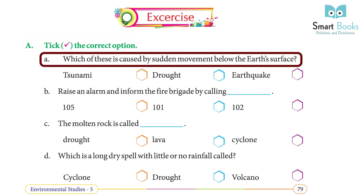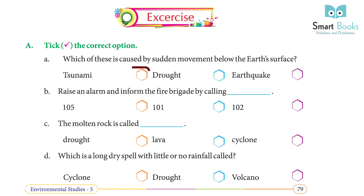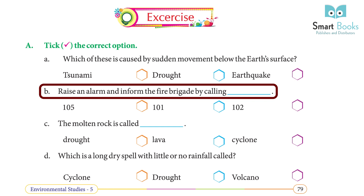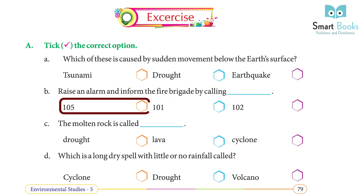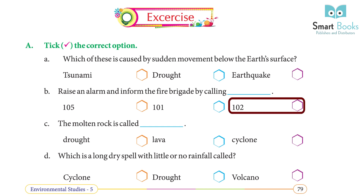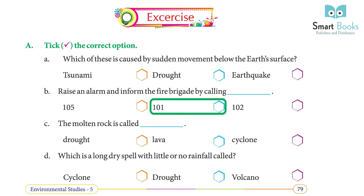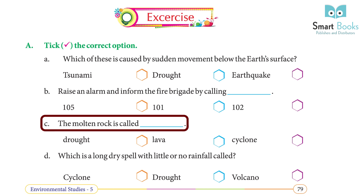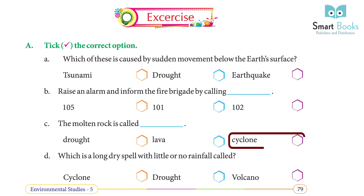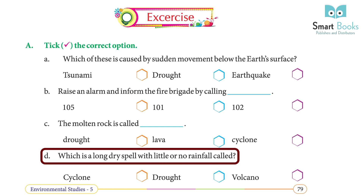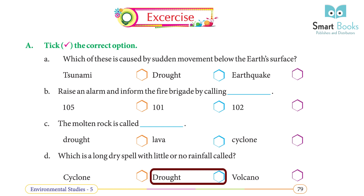Exercise A — Choose the correct option. Which of these is caused by sudden movement below the earth's surface? Answer: Earthquake. Raise an alarm and inform the fire brigade by calling which number? Answer: 101. The molten rock is called? Answer: Lava. Which is a long dry spell with little or no rainfall called? Answer: Drought.